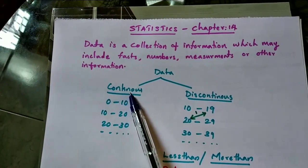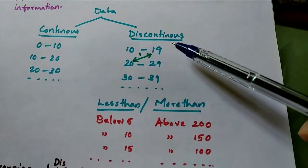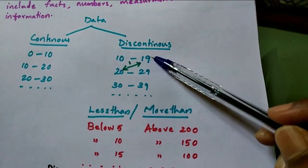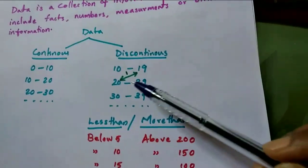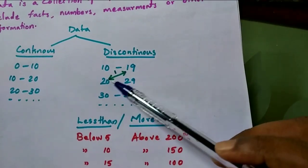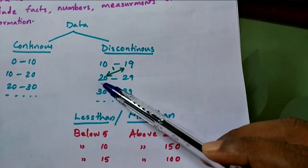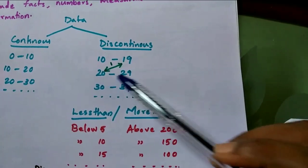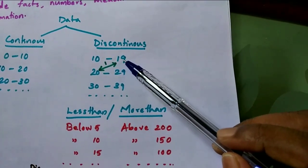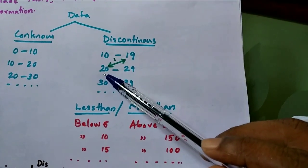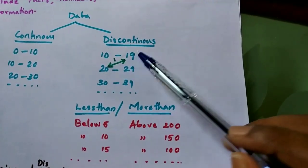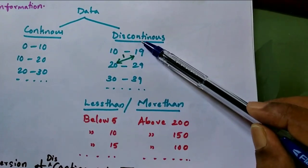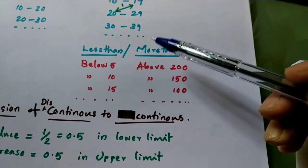Next is discontinuous data. Here's another example: 10 to 19, 20 to 29, 30 to 39. See, here we have a gap between 19 and 20. The first interval is 10 to 19 and the second interval is 20 to 29. We have a gap between 19 and 20, which is 1. This type of data is called discontinuous data.